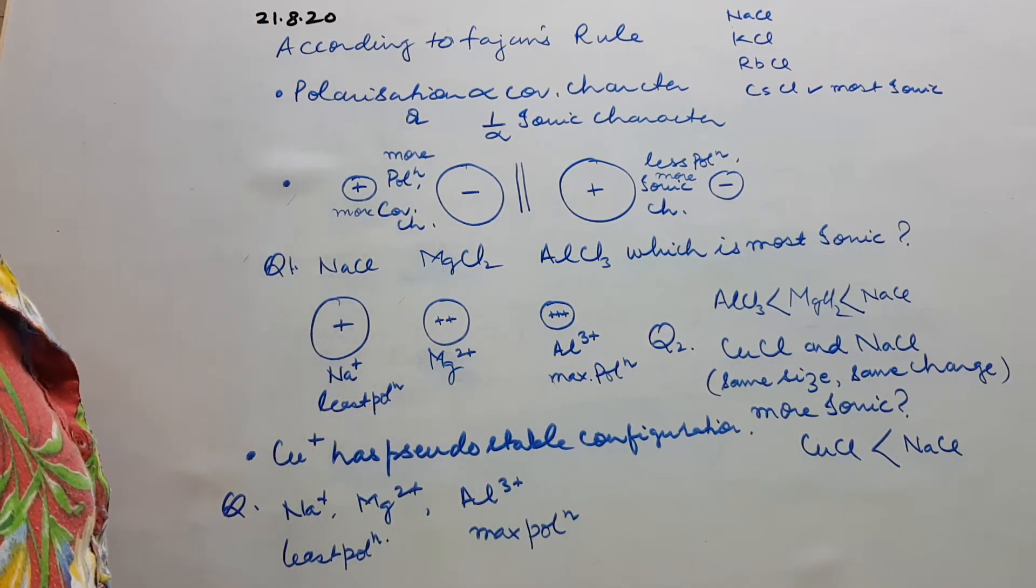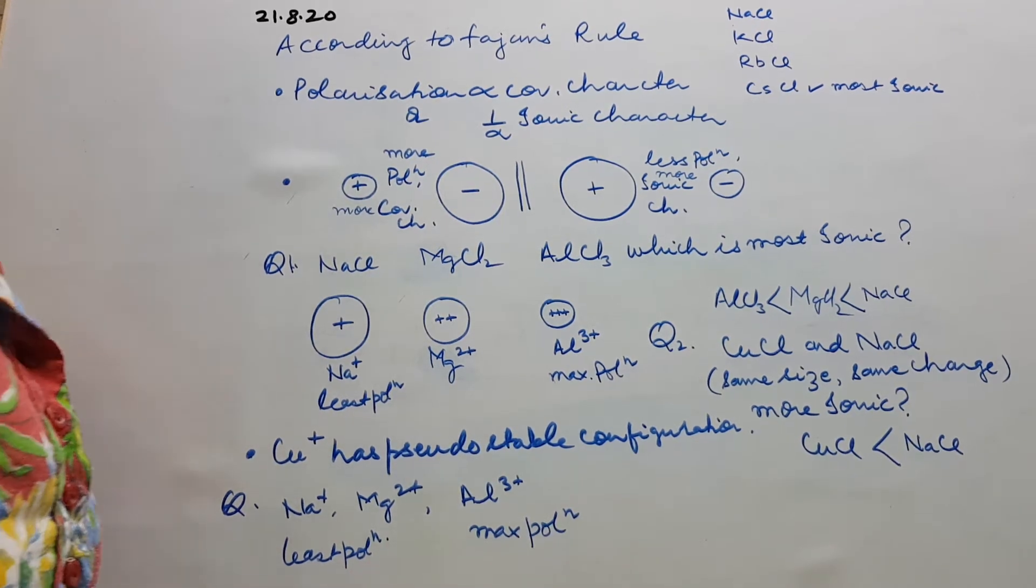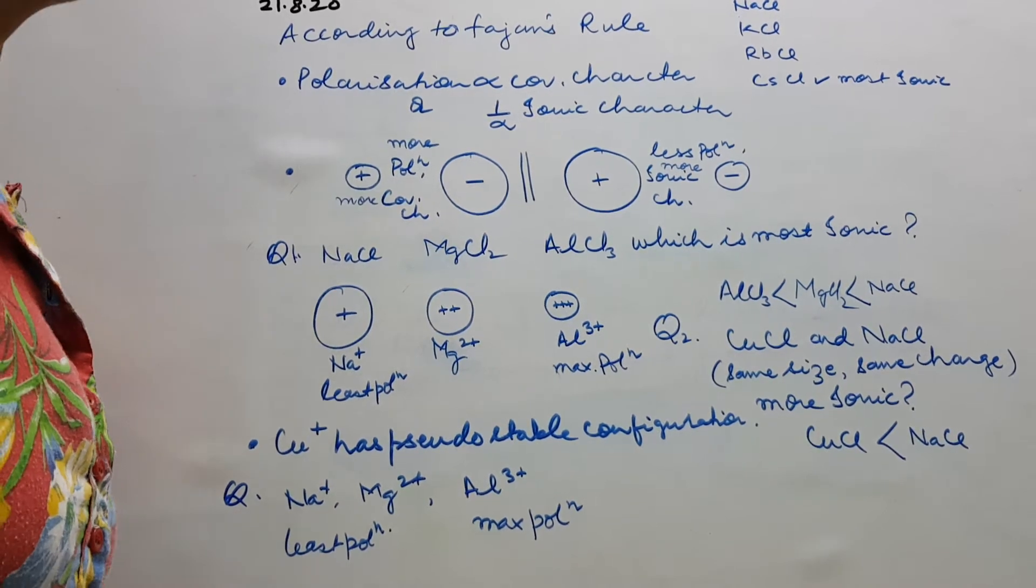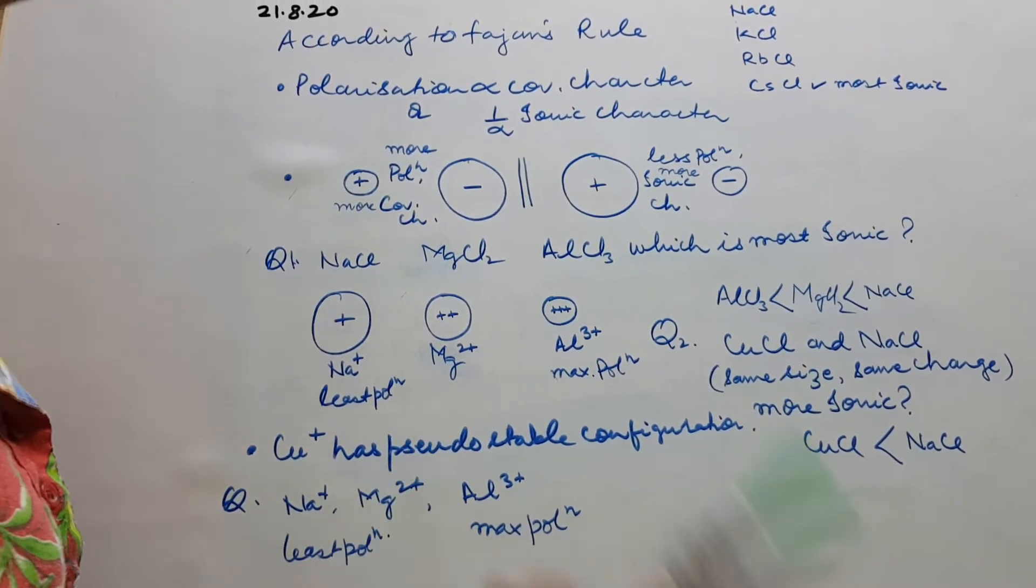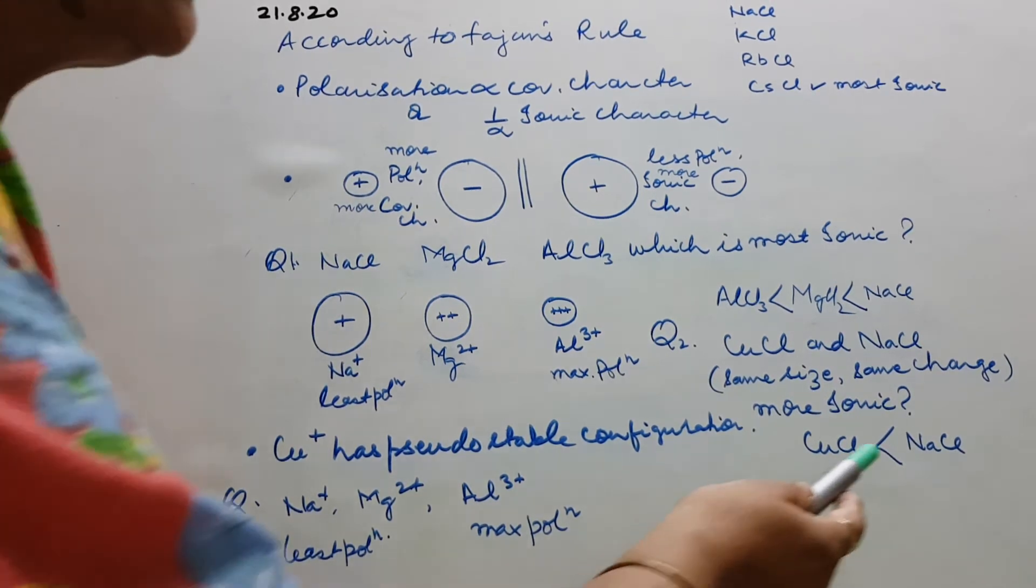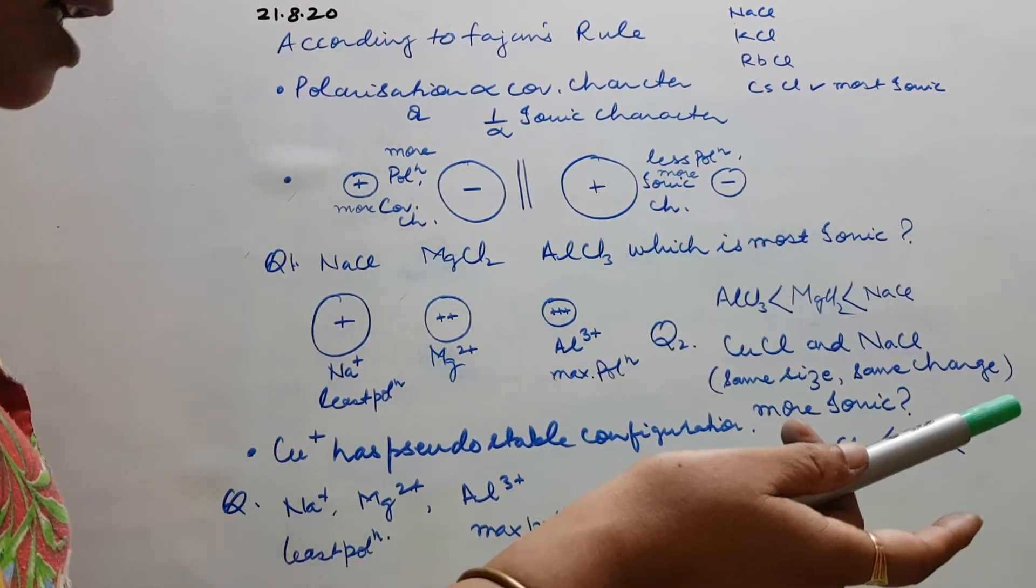As I told you in the last video, the one which has got pseudo-stable configuration will have more polarization and more of covalent character. We know Na will be having octet complete, while in this case I have shown in my last video, Cu was having pseudo-stable configuration.